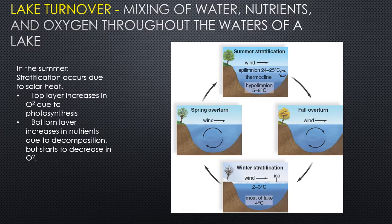The decomposers use up oxygen at the bottom, so oxygen there is lower in summer — high oxygen at top, low at bottom. In fall, as temperatures drop and winds create mixing, the layers blend until water temperatures are uniform from top to bottom — that's fall turnover, resulting in a uniform temperature gradient with no stratification.